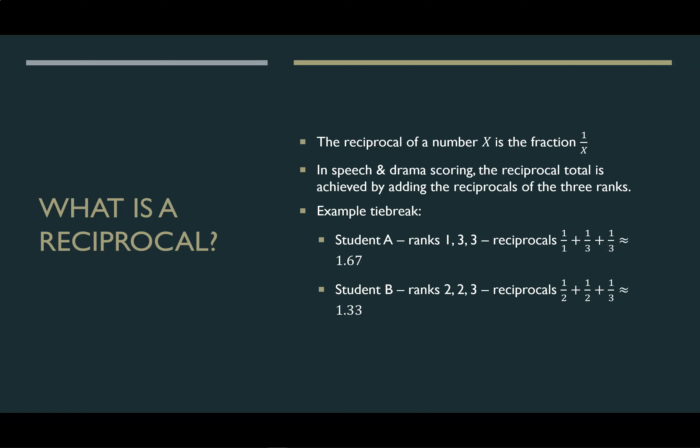Just as a real quick math lesson, a reciprocal is just the one over the number that you're looking at. So a rank of two becomes a reciprocal of one half. A rank of five becomes a reciprocal of one fifth. When we're scoring reciprocals, what you do is you add the reciprocals of those three ranks. I'm going to show you a shortcut that does not require a calculator.